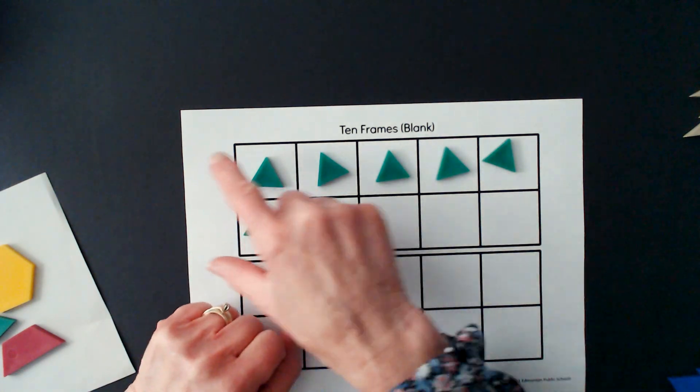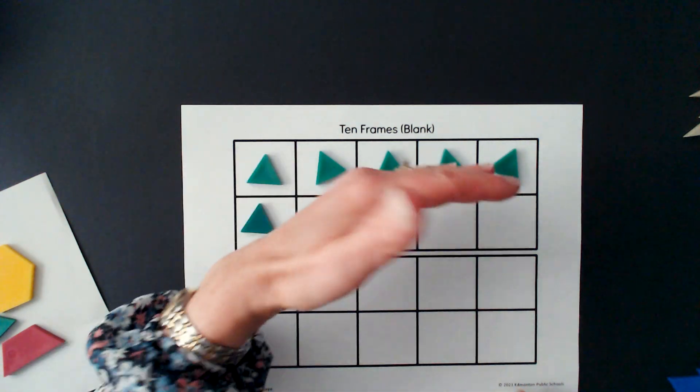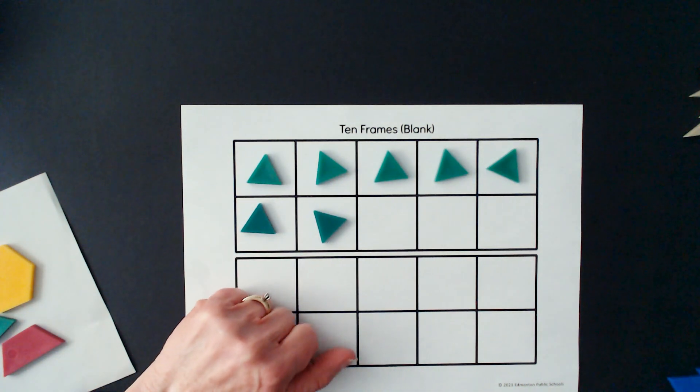I know that there are seven here without having to count because I know that five and two more is seven.